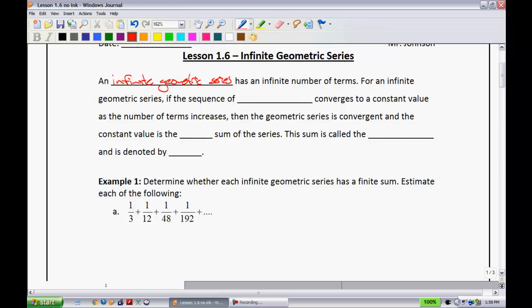An infinite geometric series has an infinite number of terms. If the sequence of partial sums converges to a constant value as the number of terms increases, then the geometric series is convergent, and the constant value is the finite sum of the series. This sum is called the sum to infinity, and is denoted by S sub-infinity.